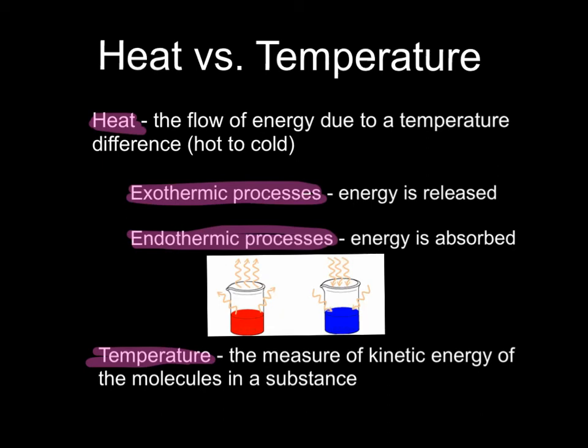There are two different kinds of processes that involve heat: exothermic and endothermic processes. Both exothermic and endothermic processes can be either physical or chemical. If you think back to biology, 'endo' and 'exo' are prefixes. Exo means outer, so energy is being released. Endo means inward — energy is being absorbed in an endothermic process. You've heard these terms before in terms of skeletons: crustaceans have exoskeletons and humans have endoskeletons.